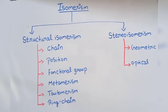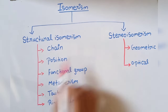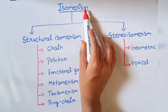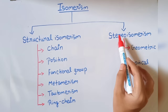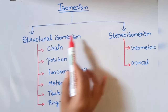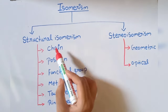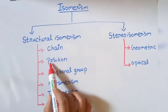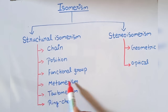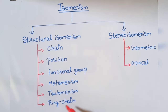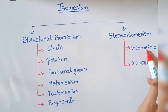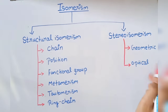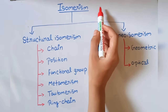Hello everyone, welcome to V-Science Academy. Today we are going to study the types of structural isomerism. Isomerism is classified into two types: first is structural isomerism and second is stereo isomerism. Structural isomerism is further classified into six types: chain isomerism, position isomerism, functional group isomerism, metamerism, tautomerism, and ring chain isomerism. Stereo isomerism is classified into two types: geometric isomerism and optical isomerism.